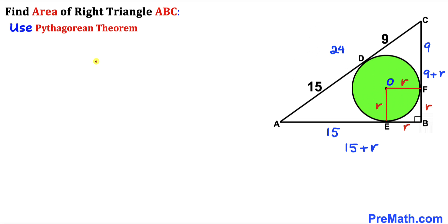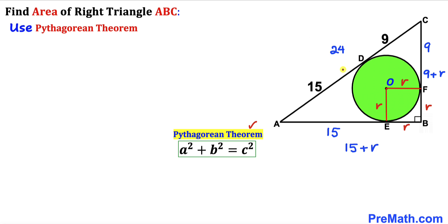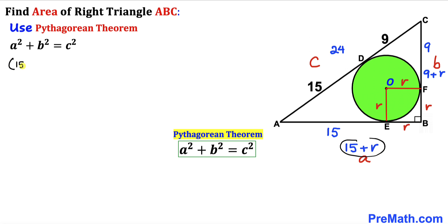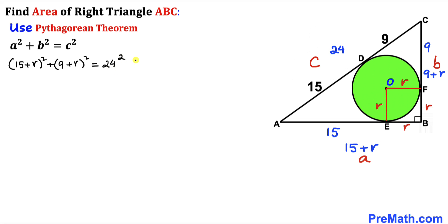Since we are dealing with a right triangle, we apply the Pythagorean theorem: a² + b² = c². Here, a = 15 + r, b = 9 + r, and c = 24 (the hypotenuse). So our equation is: (15 + r)² + (9 + r)² = 24².